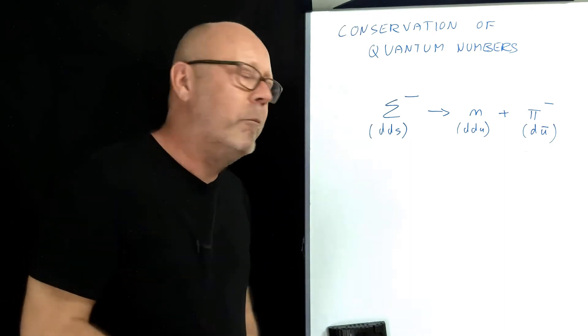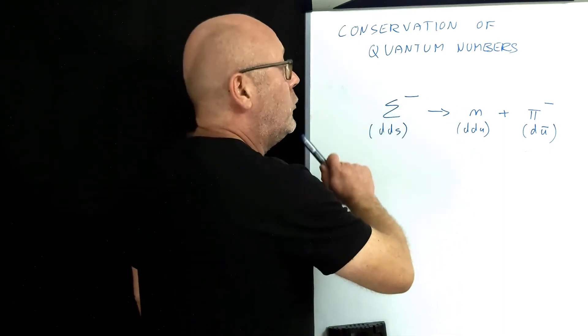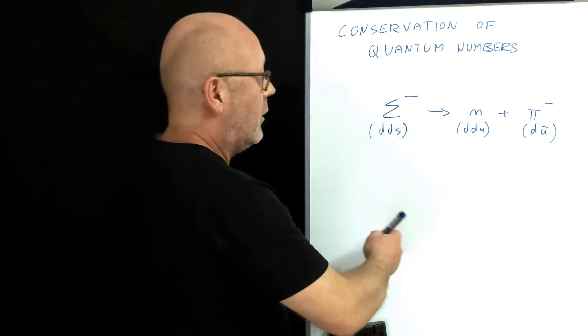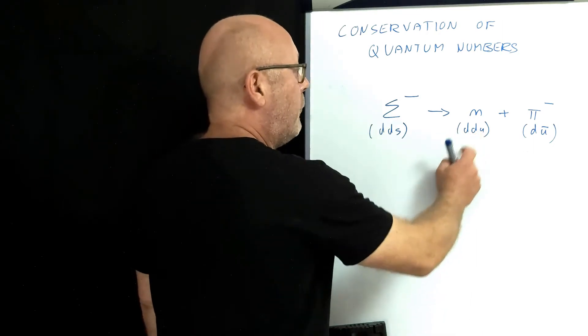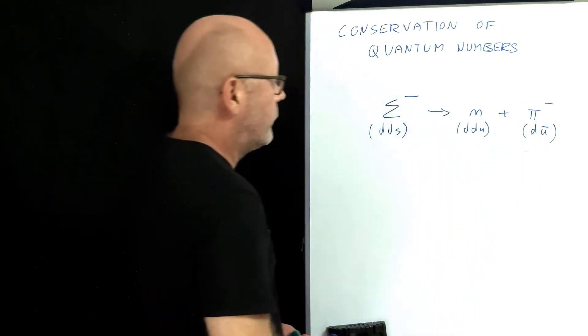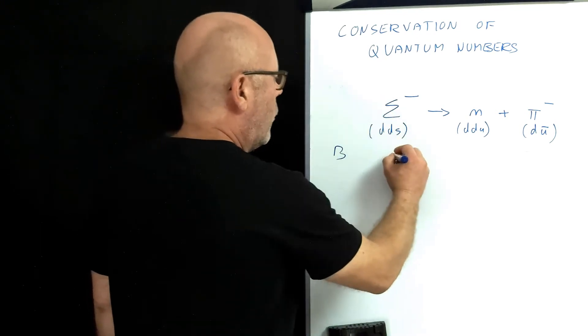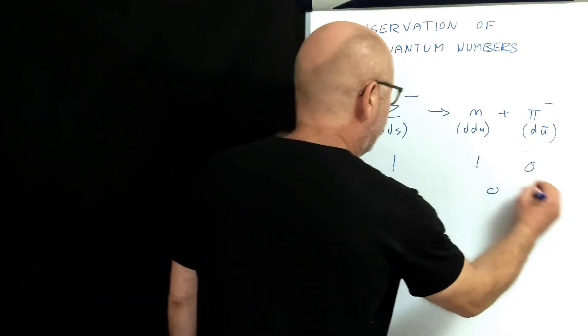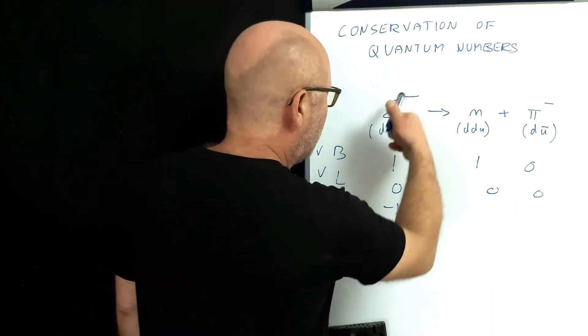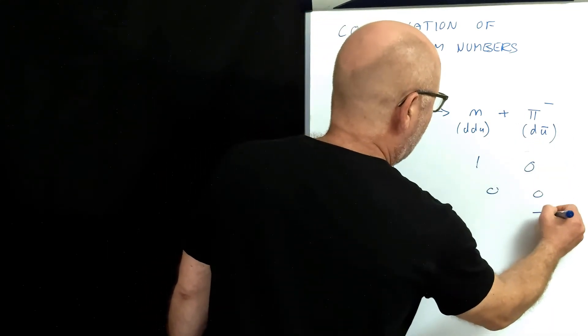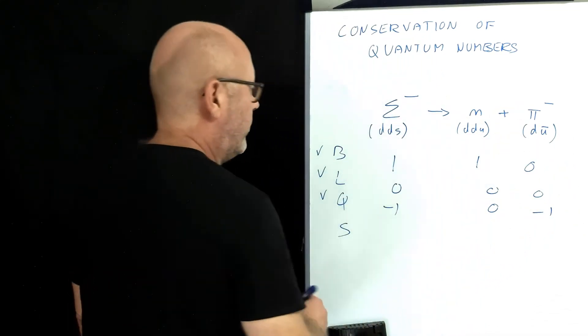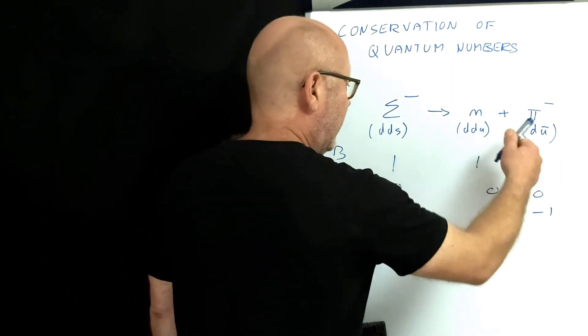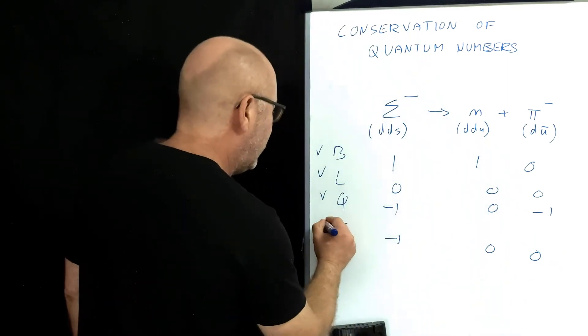To give you an example, we have a negative sigma that transforms into a neutron and a negative pion. The negative sigma is made of down, down and strange, the neutron's down, down and up, and the negative pion down and anti-up. Baryon number: 1, 1, 0, conserved. Lepton number, 0 everywhere. Charge: negative 1, negative 1. Neutron is neutral, so 0. Conserved. Strangeness: negative 1 because we have a strange quark in the sigma. But we don't have any strangeness here. So strangeness is not conserved.